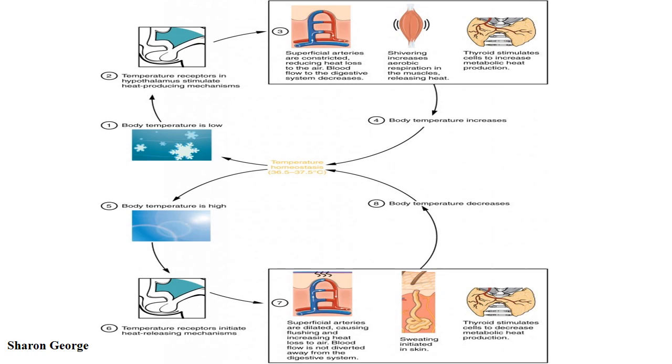Conversely, if the temperature falls below the set core temperature, the hypothalamus can initiate shivering to generate heat.